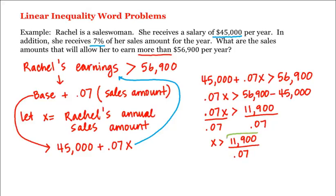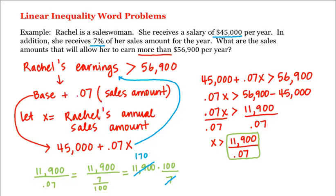What is this number? Let's compute that. 11,900 divided by 0.07 equals 11,900 divided by 7 divided by 100, which equals 11,900 times 100 divided by 7. And 7 goes into 11,900 1,700 times.